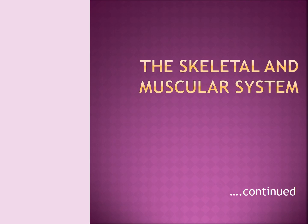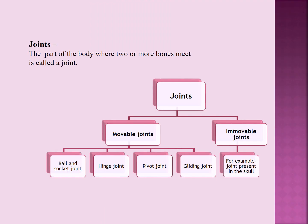Hello children. I am here with the second part of our chapter, the skeletal and muscular system. In the first part, we have already discussed about the different kinds of bones present in our human body and what are their functions. In today's class, we will discuss about the different joints present in our body.